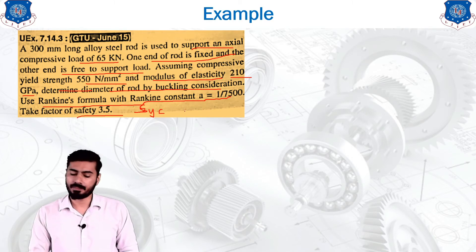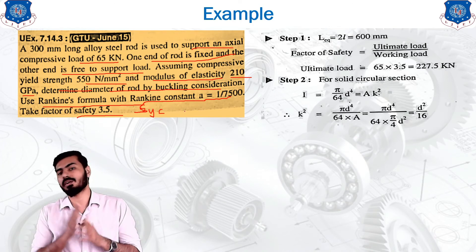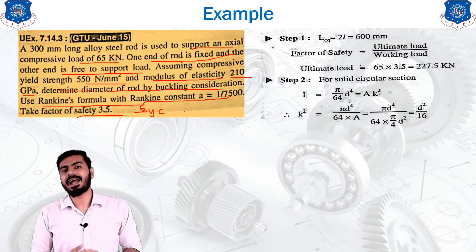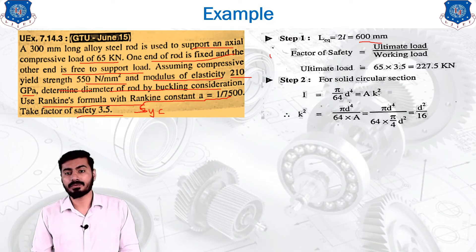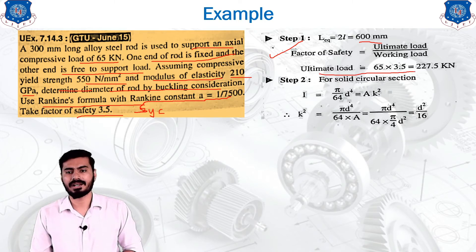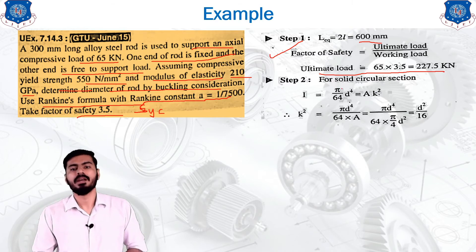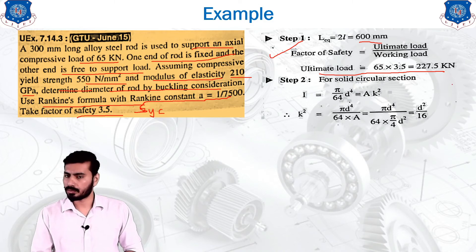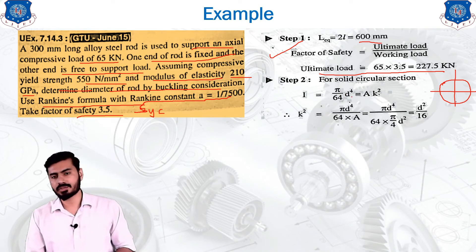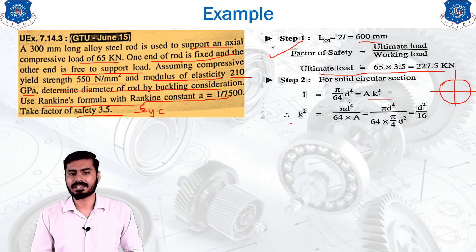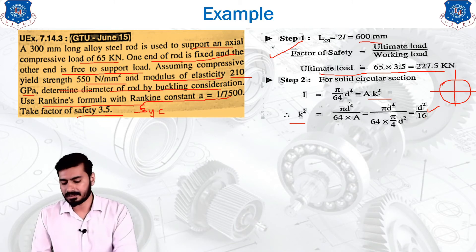Step 1 is the calculation of equivalent length. For one end fixed and other end free, the equivalent length is 2L, which equals 2 × 300 = 600 mm. The factor of safety equals ultimate load divided by working load, so the ultimate load is calculated as 227.5 kilonewton. For a solid cross section, the moment of inertia I = π/64 × d^4. Since I = Ak², we get k² = d²/16, so k = d/4.